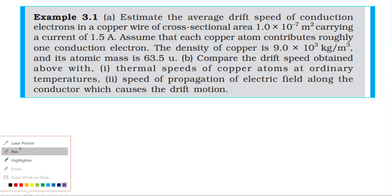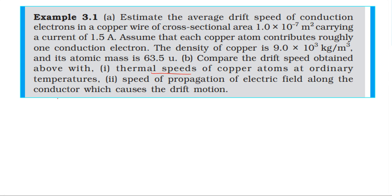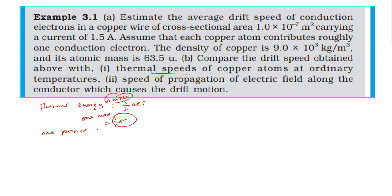Now let's check the thermal speed. Thermal energy of a substance is (3/2)nRT. For 1 mole, thermal energy per atom is (3/2)kT, where k is Boltzmann constant and T is temperature. Setting kinetic energy equal to thermal energy gives the thermal speed formula.